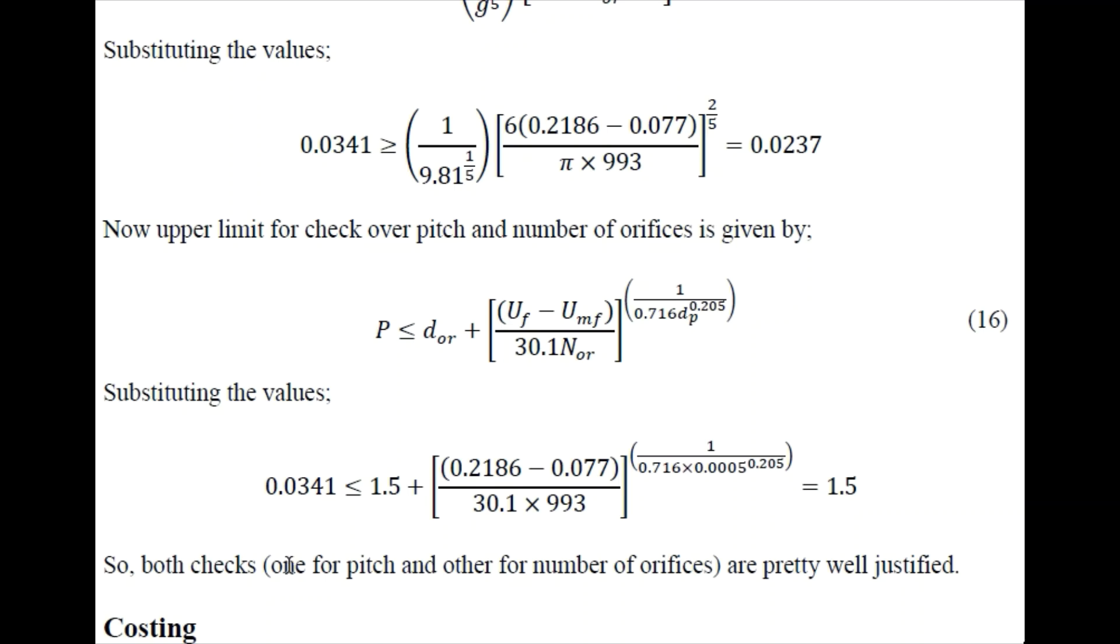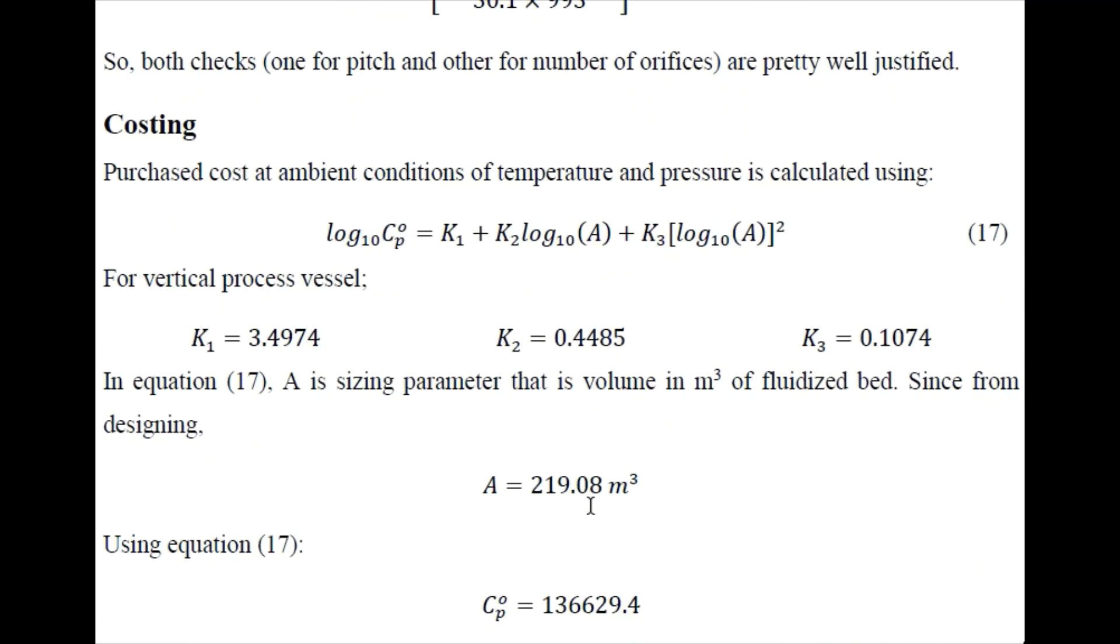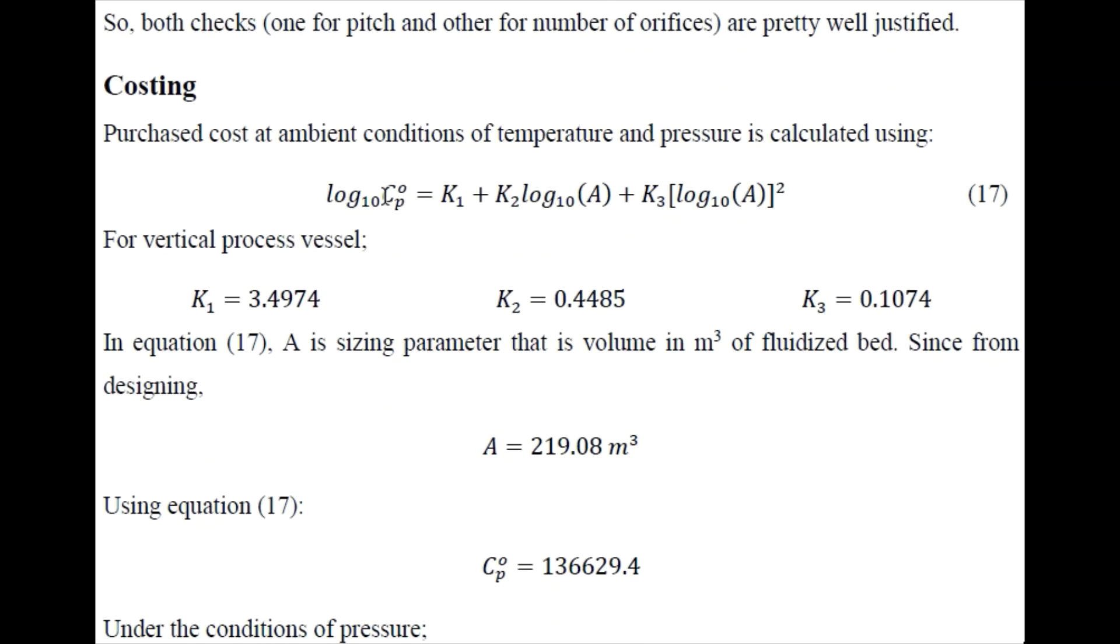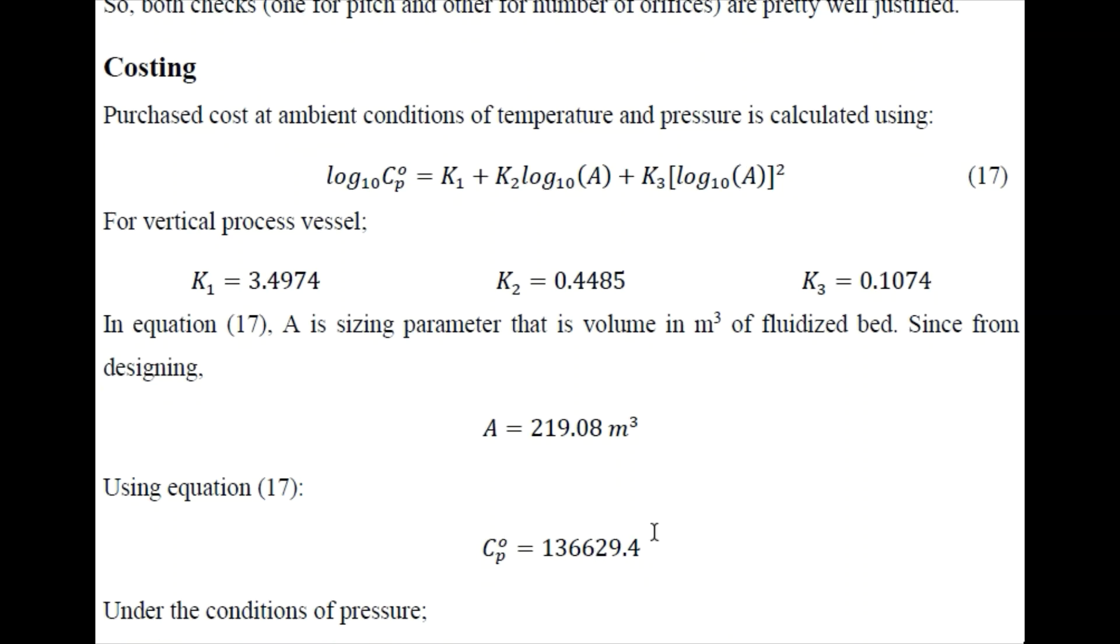Now coming towards the costing, we have this purchase cost at ambient conditions. These k1, k2, and k3 are empirical constants. We can take it for a process vessel because then we will be placing the solid material inside it. Ac is the sizing parameter which is volume. Volume we just determined from the design. Substituting these values we can just obtain the purchase cost at the ambient conditions.